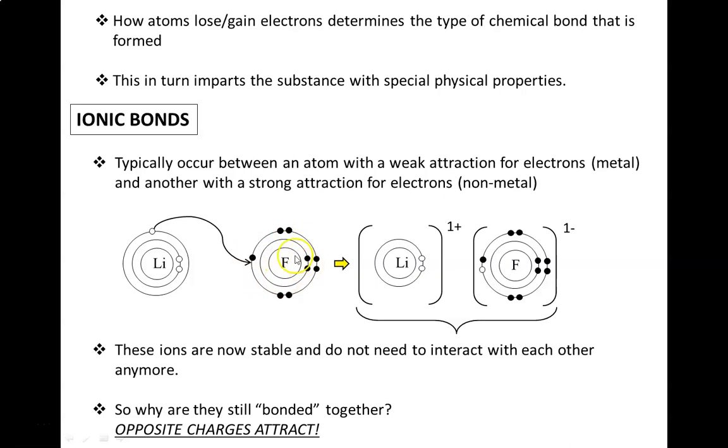In this case, fluorine's attraction for electrons is so strong it's able to grab onto lithium's valence electron and transfer it permanently into fluorine's valence shell. This creates a fluorine anion with a charge of 1-, meanwhile a lithium cation is produced with a charge of 1+.